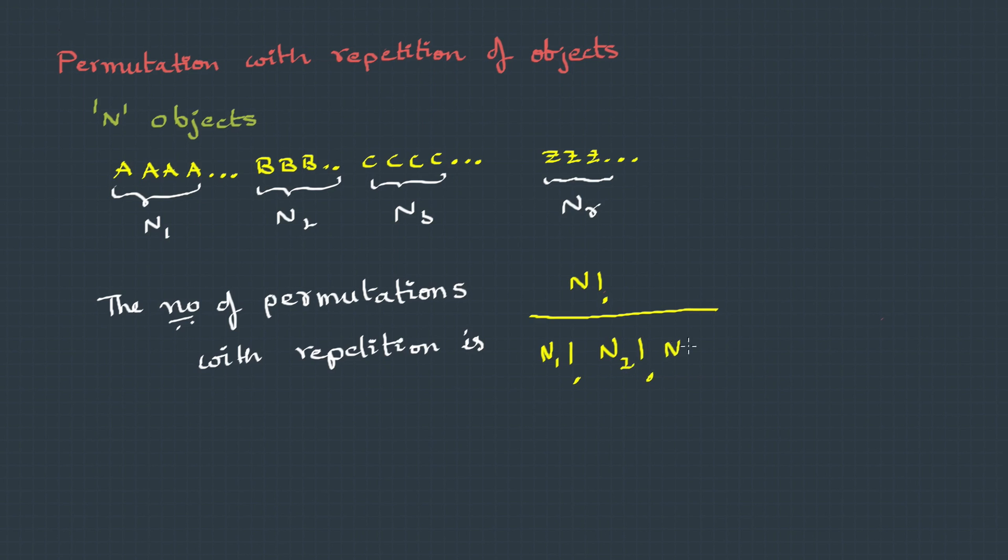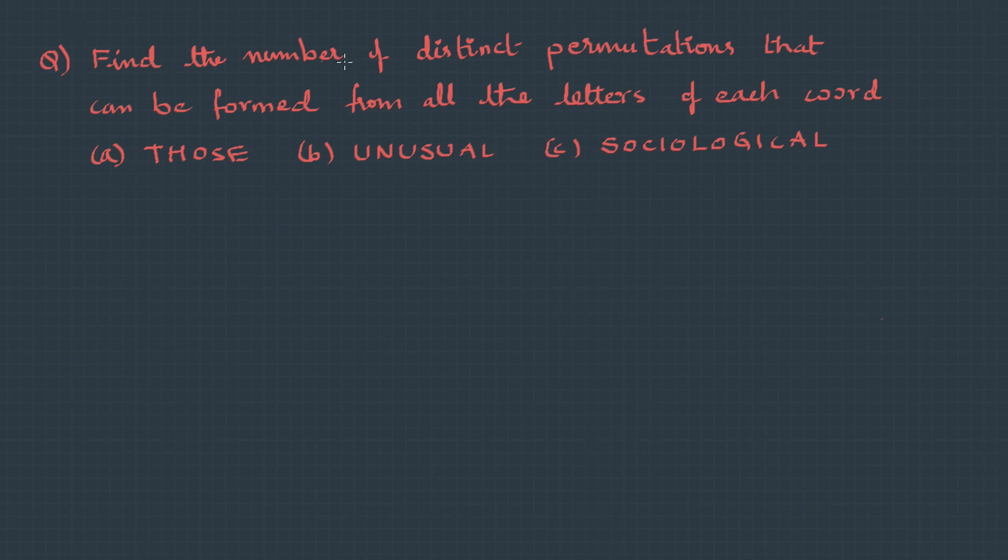Let's quickly solve the question: find the number of distinct permutations that can be formed from all the letters of each word. First one is THOSE, the second is UNUSUAL, third is SOCIOLOGICAL.